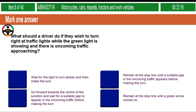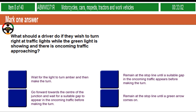What should a driver do if they wish to turn right at traffic lights while the green light is showing and there is oncoming traffic approaching? Wait for the light to turn amber and then make the turn. Remain at the stop line until a suitable gap in the oncoming traffic appears before making the turn. Go forward towards the centre of the junction and wait for a suitable gap to appear in the oncoming traffic before making the turn. Remain at the stop line until a green arrow comes on.